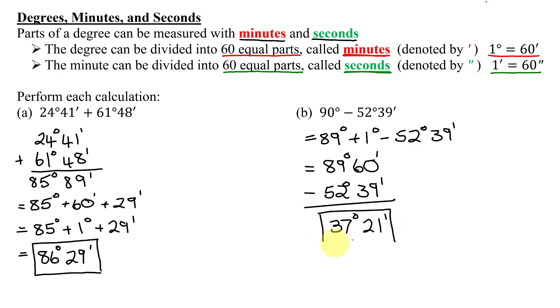So my answer is 37 degrees 21 minutes. Now in working out both of these problems, I wrote every single step to explain what I was doing, but you don't need to. You can often go directly from here to here and from here to here.